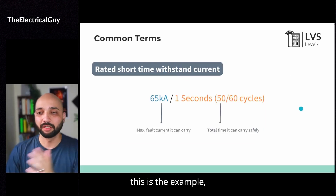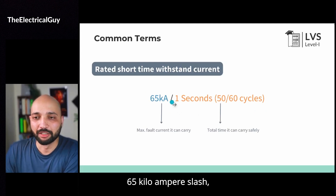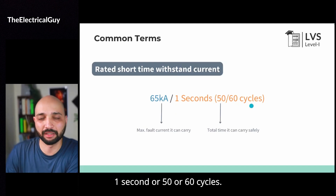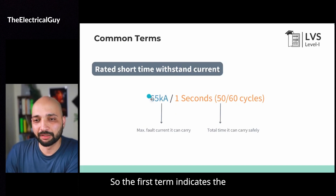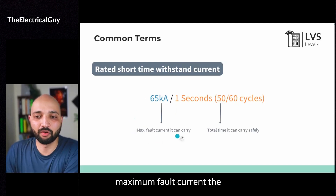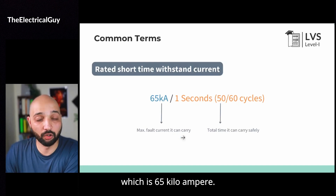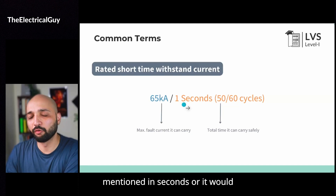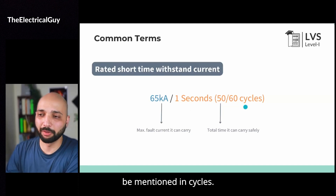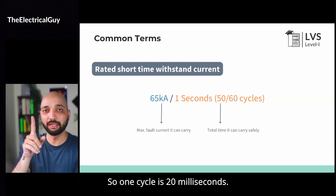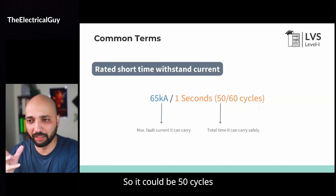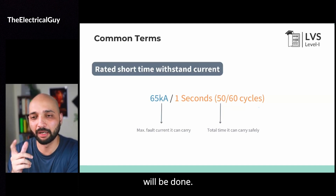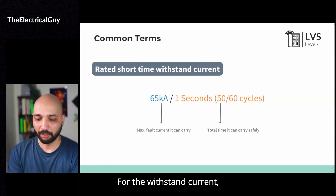So that is rated short time withstand current. Here is the example of how you will see it represented: you may find 65 kA / 1 second, or 50 or 60 cycles. The first term indicates the maximum fault current the switchgear can carry, which is 65 kA, and for how much time — it could be 1 second, or it would be mentioned in cycles, where 1 cycle is 20 milliseconds, so it could be 50 cycles or 60 cycles. This is how the representation will be done for the withstand current.